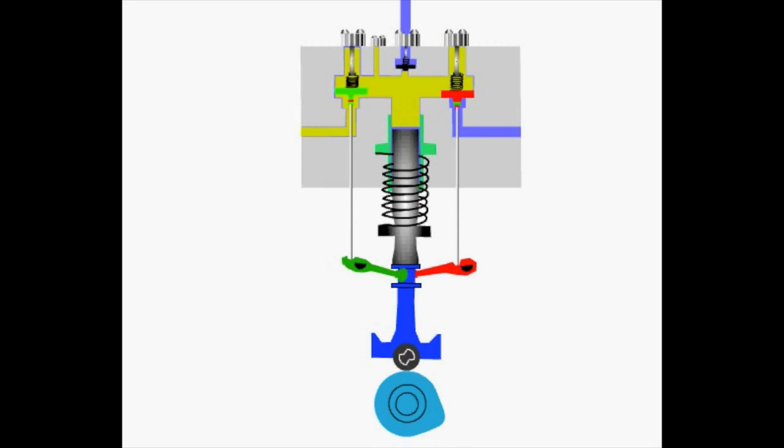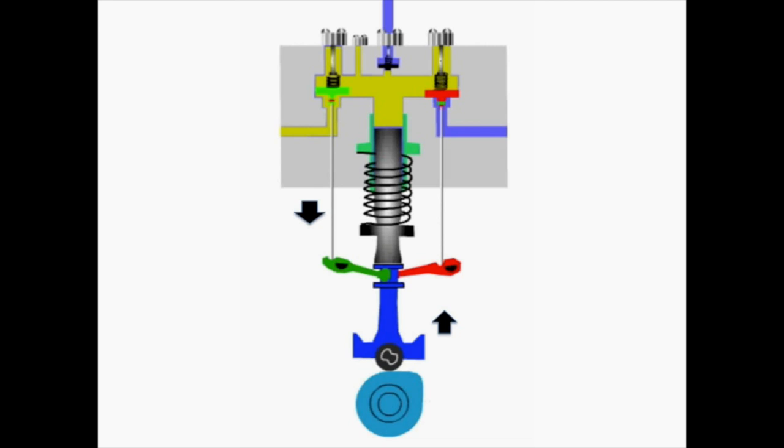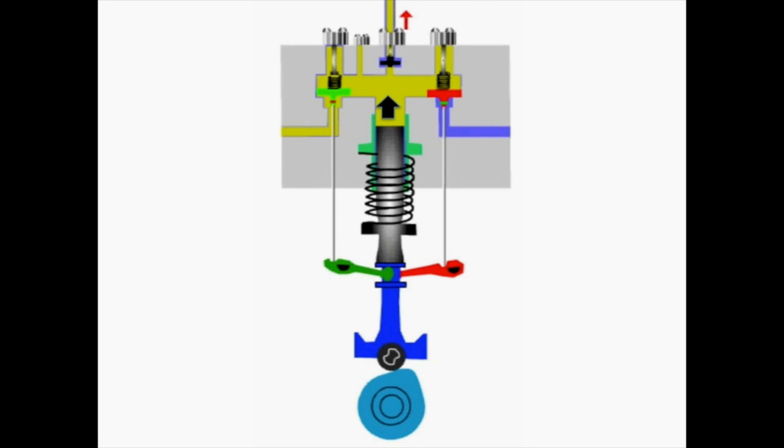With the follower assembly moving up in the cam profile, the suction pushrod moves down due to the position of the eccentric which is between the pushrod and the plunger, leading to closing of the suction valve.